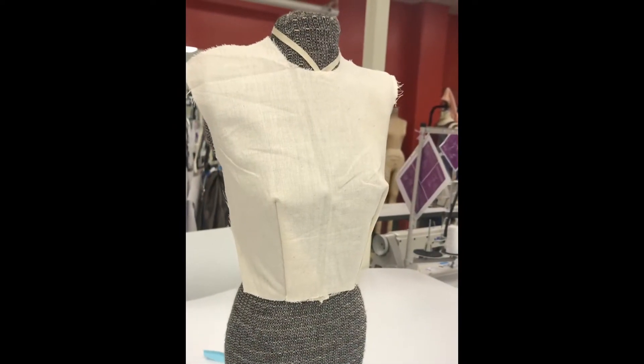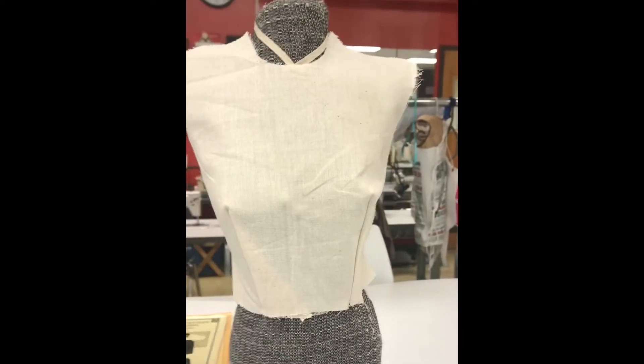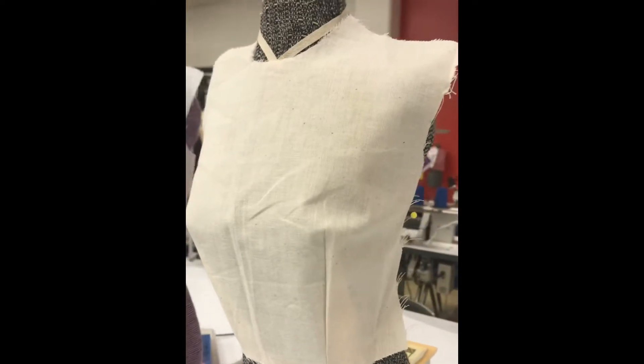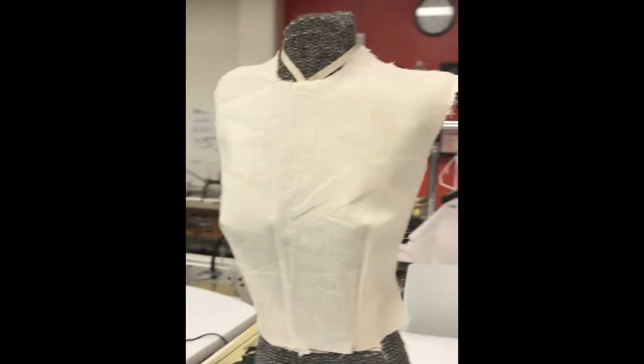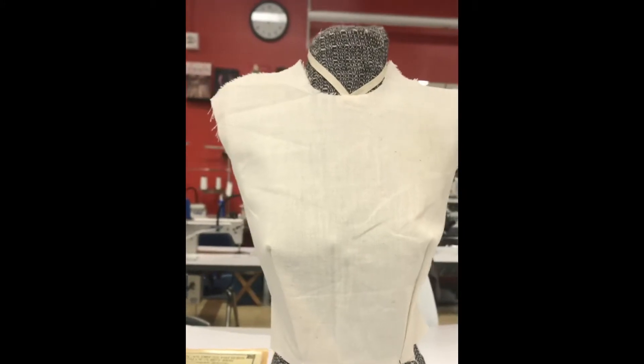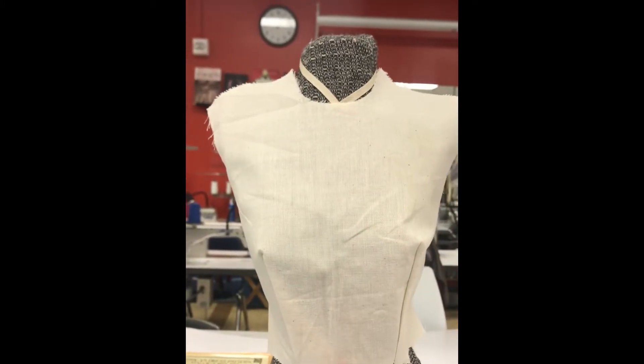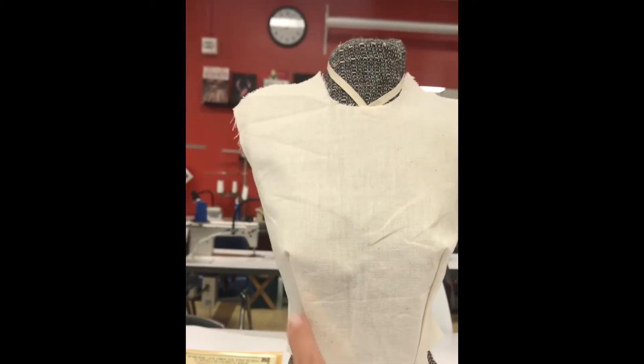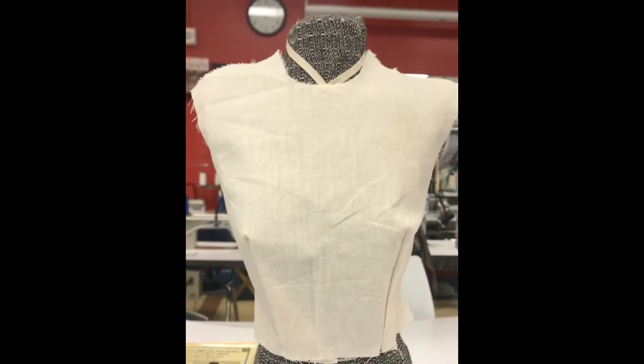So this is the front bodice cut out of fabric and sewn up. Is this what you visualized where the center front fold goes down center front and then you have a dart at a slight angle next to it?